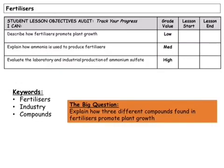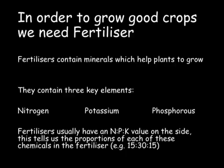Our big question today is to look at how three different compounds found in fertilisers promote plant growth. In order to grow good crops we need fertiliser. Fertilisers contain minerals which help plants to grow. They contain three key elements: nitrogen (N), potassium (K), and phosphorus (P). On the side of a fertiliser you have an NPK value, which tells us the proportions of each of these chemicals in the fertiliser.